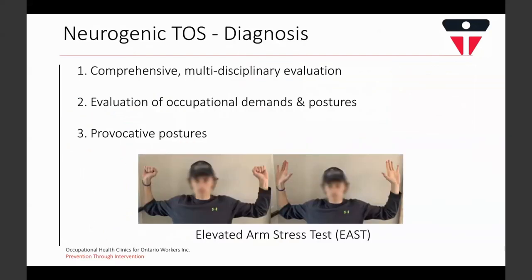The diagnosis of TOS includes a thorough evaluation of symptoms and symptom characteristics, such as the type and location of symptoms, and should involve a comprehensive clinical history of when and how the symptoms began. The evaluation should be multidisciplinary and include occupational demands and postures. It should also assess whether symptoms are reproduced in provocative postures involving elevated arm positions or repetitious hand-arm use, such as the elevated arm stress test or EAST test.